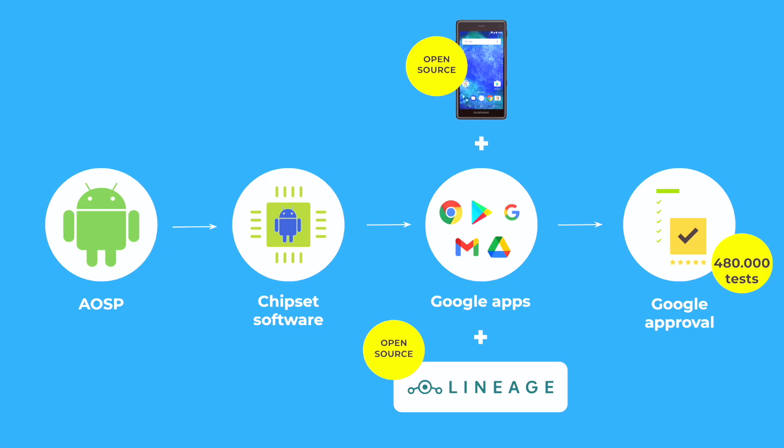Also, we put the Google apps on the phone so that you can install all your apps through the Google Play Store. At the end of the process, we get approval from Google. For the Google approval, we have to go through some 100,000 tests. And this is really the biggest challenge for us because if one single test does not pass for us, we are really stuck on the project.